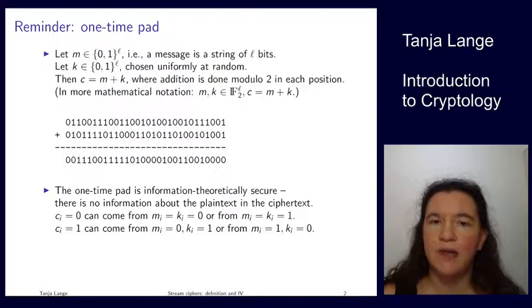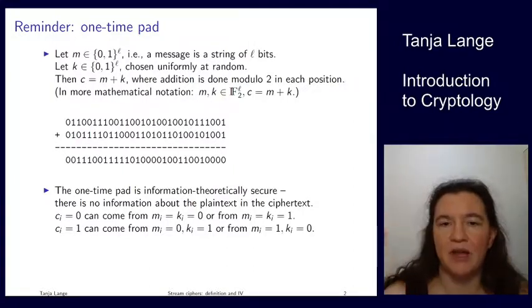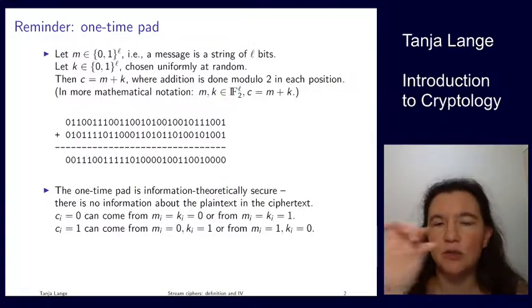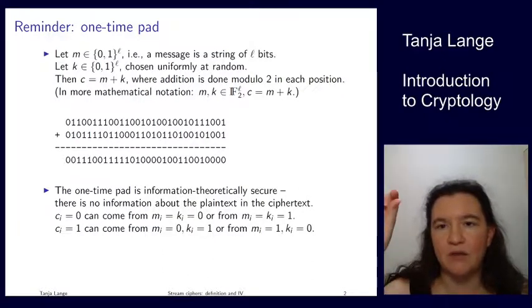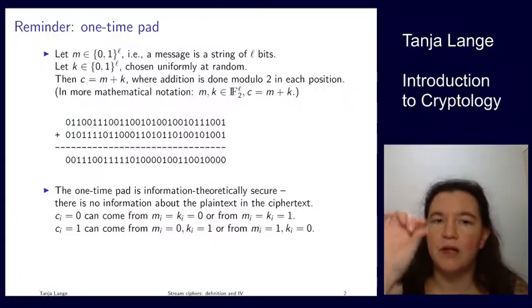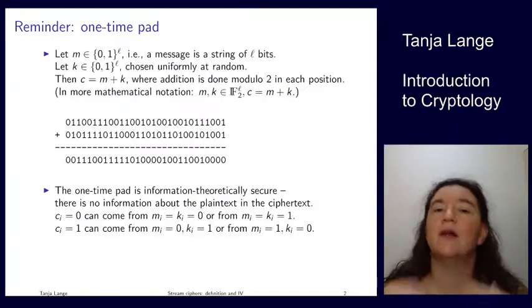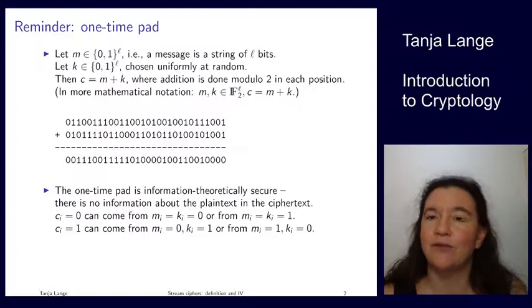Let me give you the one-time pad in the simplest version, namely as an equation of bits. We have our plaintext and our keystream, and the addition is simply addition modulo 2. In the first position we have 0 plus 0 giving 0, 1 plus 1 giving 0, 1 plus 0 giving 1, and 0 plus 1 giving 1. What a coincidence that in an example in the lecture we see exactly the four cases in the first four positions.